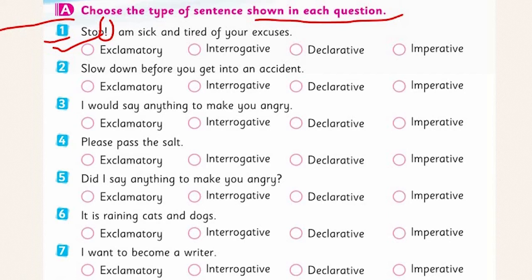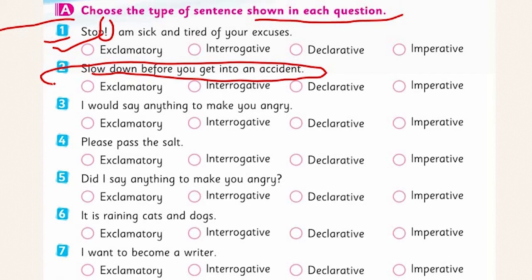Look at the second one: 'Slow down before you get into an accident.' It is not exclamatory — there is no exclamation mark. It is not interrogative — there is no question mark. It is not declaring anything, so it is an imperative sentence — it is giving a command or advice. Look at the third one: 'I would say anything to make you angry.'